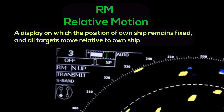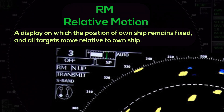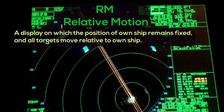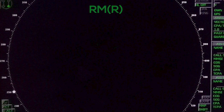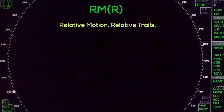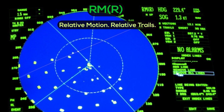Relative Motion Display: a display on which the position of own ship remains fixed, and all targets move relative to own ship. RMR — Relative Motion Relative Trails.